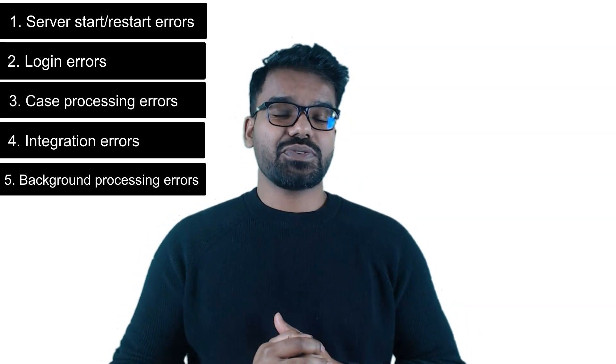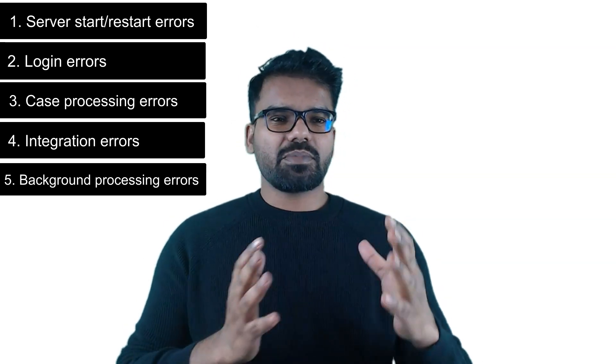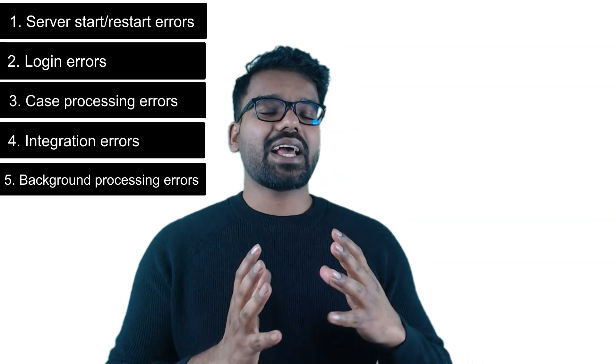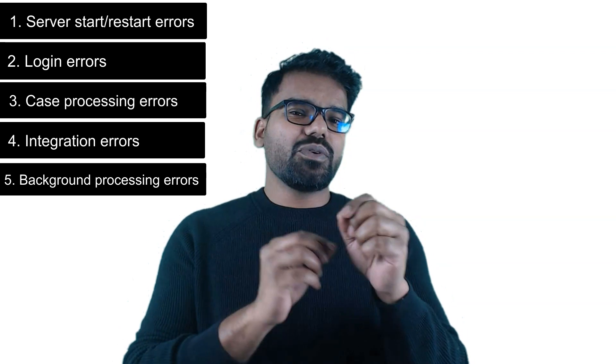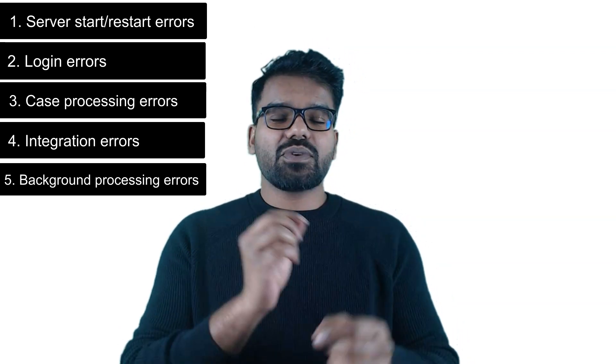The fifth category is background processing issues. Sometimes queue processes or standard agents throw errors. The first place to look is Admin Studio under queue management — there you will find broken queue entries. Look into the broken queue entries and don't blindly requeue them. First examine the XML and the error description, understand the root cause, fix the issues, and then requeue to reprocess those broken queue items.